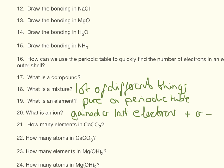How many elements are there in CaCO3? We have calcium, carbon, and oxygen, so the answer is three. How many atoms do we have? We have one calcium, one carbon, and three oxygens, so the answer there is five.